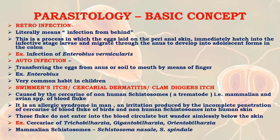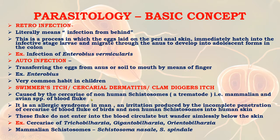Auto-infection is the transferring of eggs from the anus or soil to the mouth by means of fingers. An example is Enterobius, and this auto-infection is very common among children. Next is swimmer's itch, also known as cercarial dermatitis or clam digger's itch — an important phenomenon in trematodes.